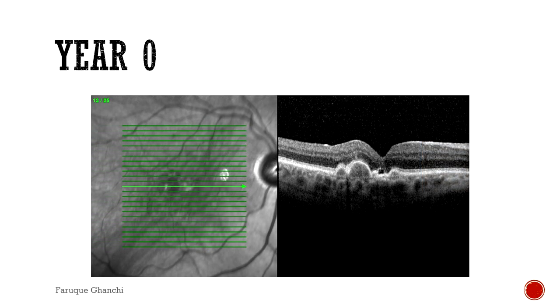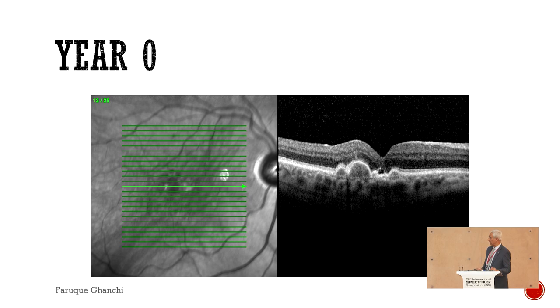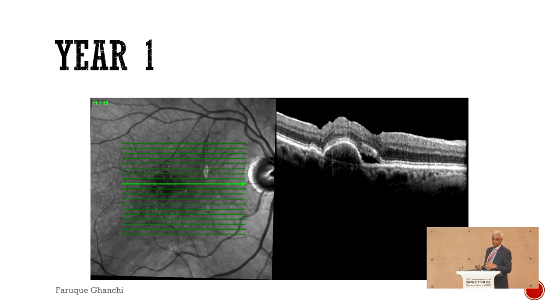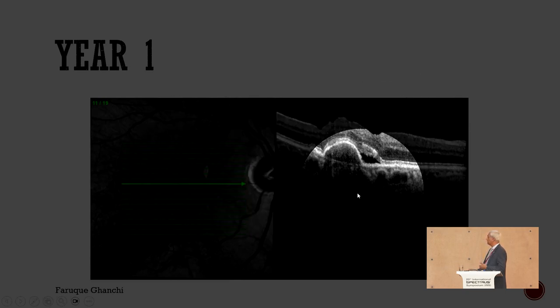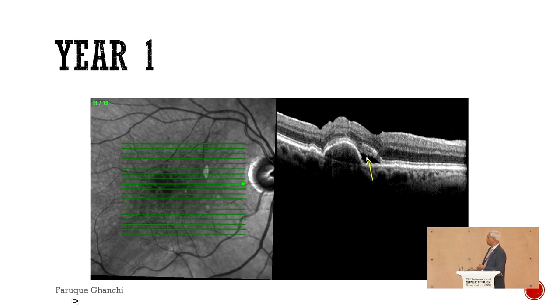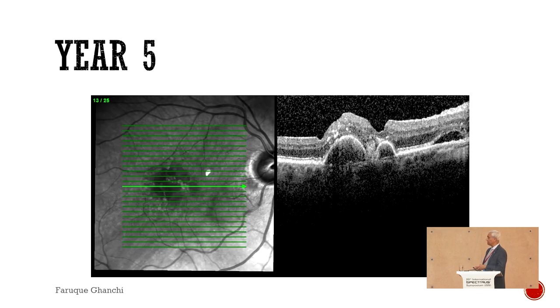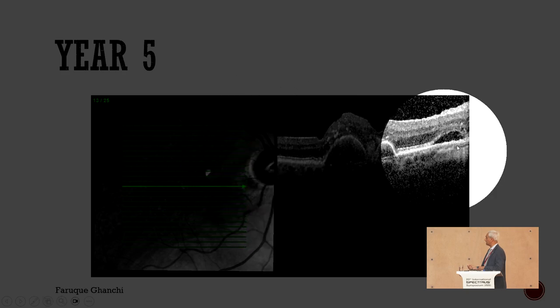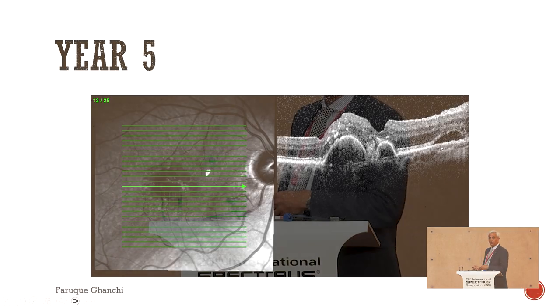We have seen examples of other types of drusen, and here I'm going to share another case with drusenoid pigment epithelial detachment. You see some large drusen. With time, the bigger drusen takes over the smaller drusen and becomes even bigger, and you have some fluid draping around your drusen. If you follow that patient further — five years down the line — you can see there are even more drusen getting bigger. And you're starting to see something really worrying on the other side: some sub-retinal fluid and undulating pigment epithelial detachment. So we need to be focusing on these changes as we go along.